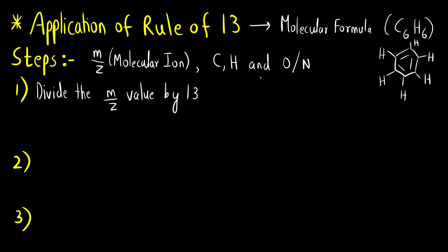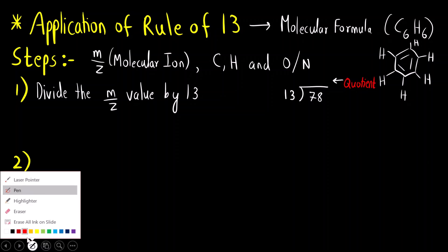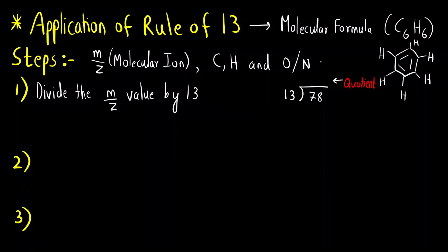How do you calculate the number of carbons and hydrogens? Suppose the m/z value is 78 and I divide it by 13. Whatever we get here is called the quotient. 13 × 6 is 78, and 78 minus 78 is 0. So the leftover value is called the remainder. Quotient and remainder.